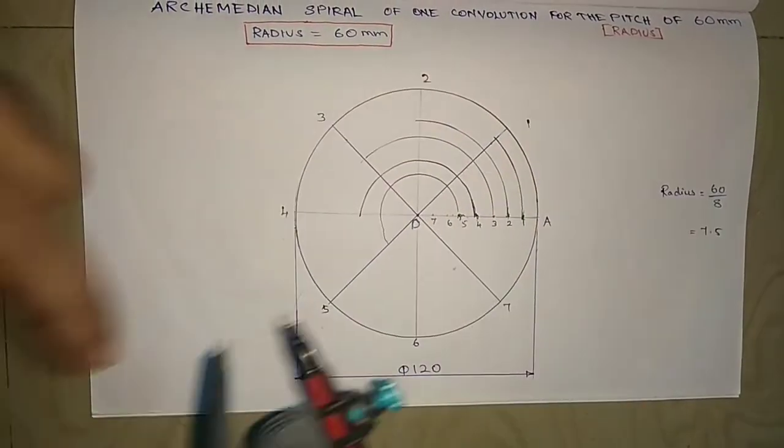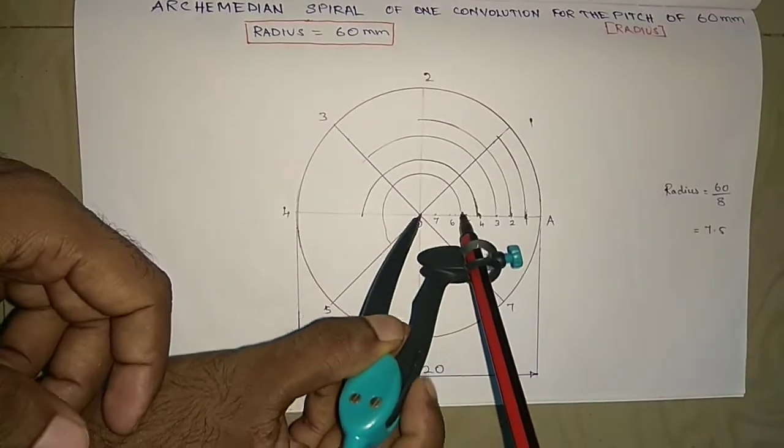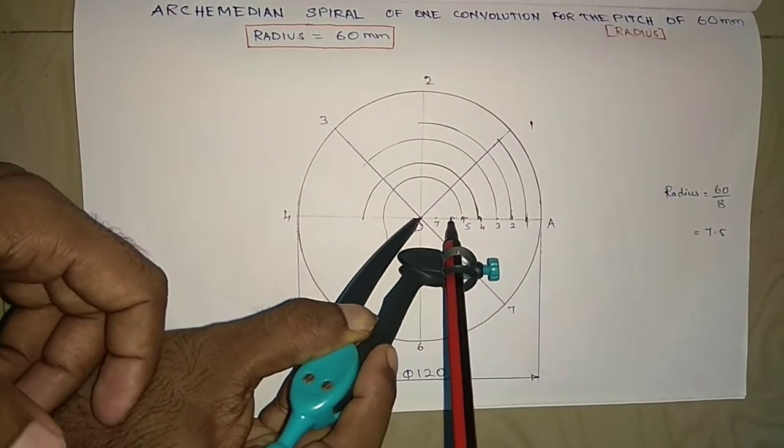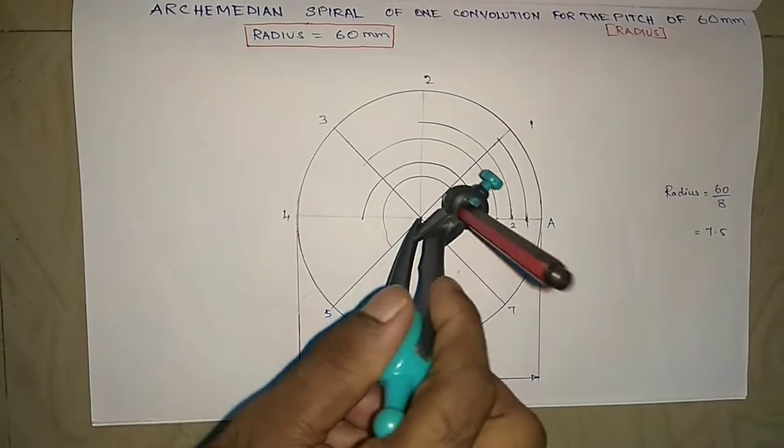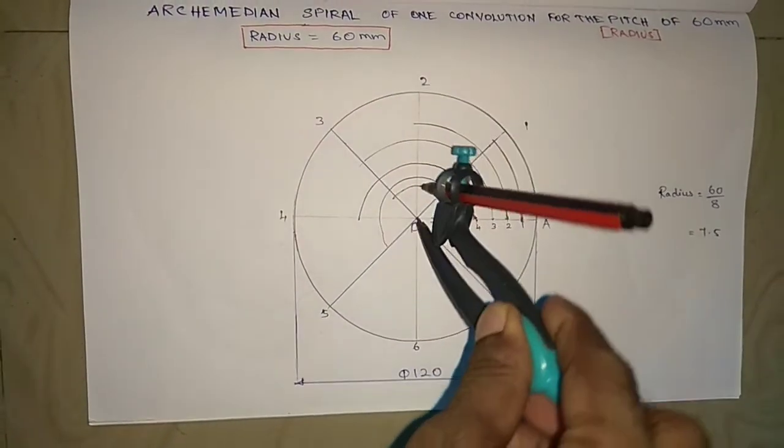Similarly points 6 and 7 also you can do it. If it is not possible, measure the distance and make an arc on the respective lines.